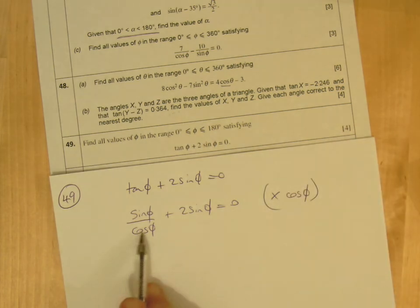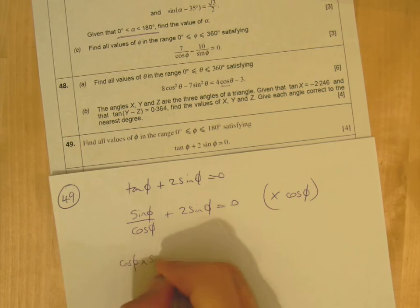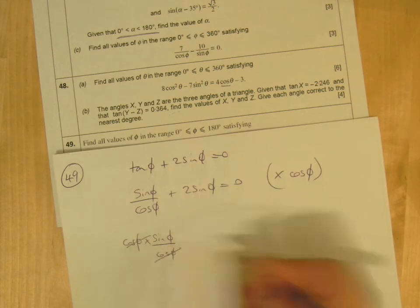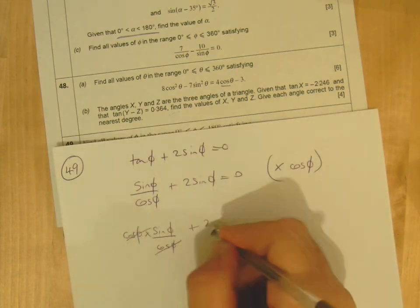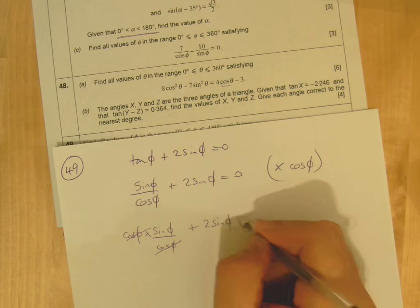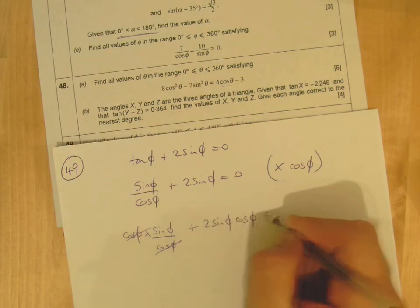If you multiply by cos, they would cancel. But of course I've got to multiply the other term by cos as well, and times zero by cos which is just zero.